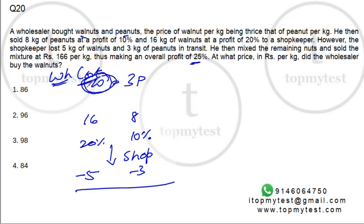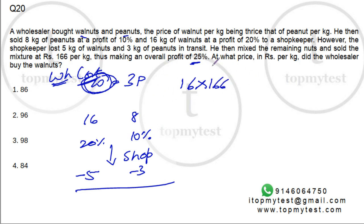Now let's look at it in parts. We need to find everything in terms of the wholesaler's cost. The shopkeeper mixed the nuts and sold at a uniform sales price making a profit of 25%. The shopkeeper's revenue is based on 16 minus 5 = 11 kilos of walnuts plus 8 minus 3 = 5 kilos of peanuts. That's 16 kilos total, sold at 166 per kilo.